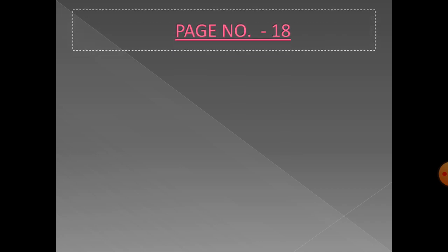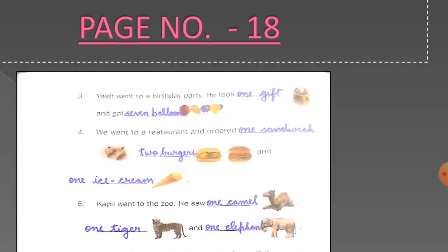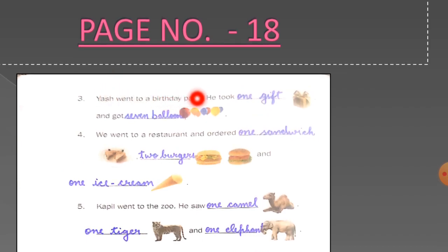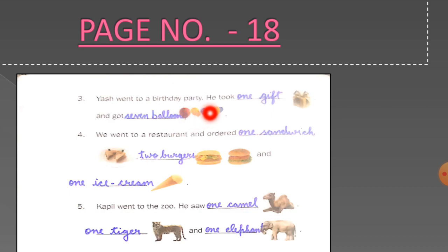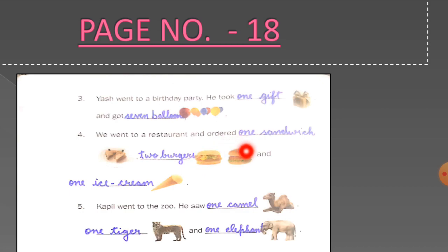Come to page number 18. 'Yash went to a birthday party. He took dash.' There is only one gift, so write '1 gift.' 'And got dash.' Count the balloons: one, two, three, four, five, six, seven — write '7 balloons.' Next sentence: 'We went to a restaurant and ordered dash.' There is one sandwich, so write '1 sandwich.' Then write '2 burgers,' and there is only one ice cream so write '1 ice cream.'